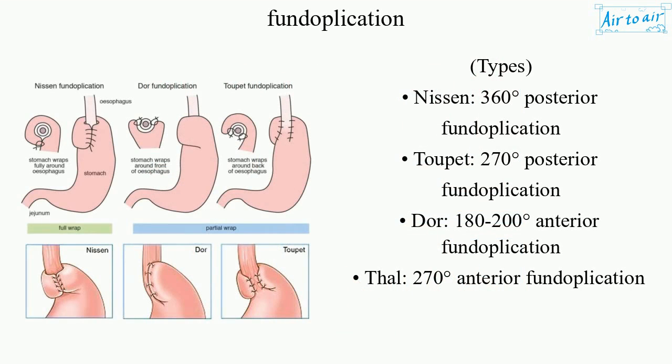Types of fundoplication: Nissen — 360 degrees posterior fundoplication; Tupet — 270 degrees posterior fundoplication; Door — 180 to 200 degrees anterior fundoplication; FAL — 270 degrees anterior fundoplication.